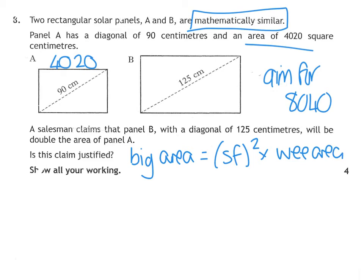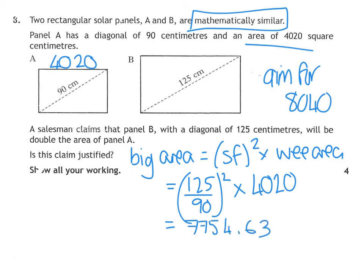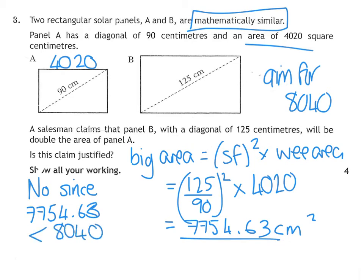We need to get the area of the larger triangle. The big area equals your scale factor squared times the wee area. That gives us scale factor 125 over 90, we square it purely because it's an area one, and the wee area was 4020. We square it and times it by 4020, and it gives us 7754.63. So Mr. Salesman is wrong. Is his claim justified? We have to say no, since 7754.63 is less than 8040. So it's not doubled.